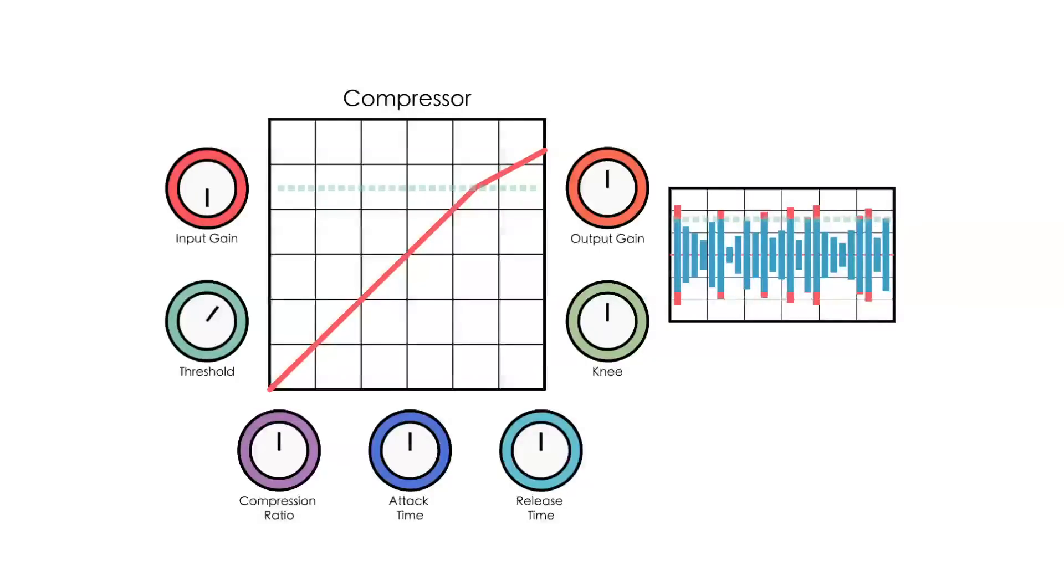Now that we have told the compressor what signals to compress we have to tell it how much to compress them. We do this with the compression ratio which determines the amount. For example a 2 to 1 ratio would reduce the part of the signal that is over the threshold by half.